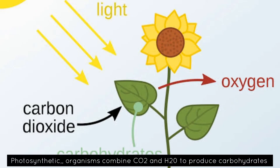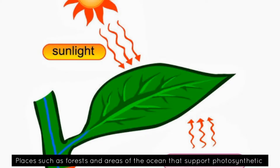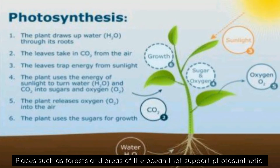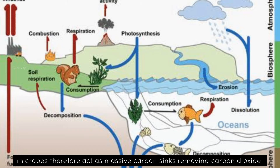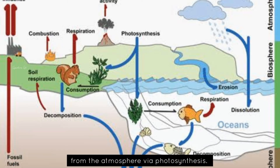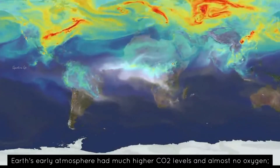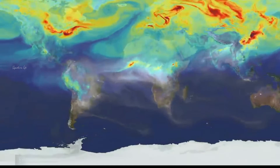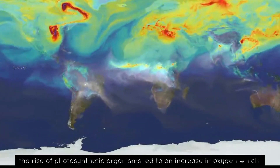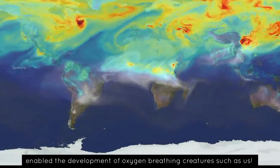Photosynthetic organisms combine carbon dioxide and water to produce carbohydrates and emit oxygen as a byproduct. Places such as forests and areas of the ocean that support photosynthetic microbes therefore act as a massive carbon sink, removing carbon dioxide from the atmosphere by photosynthesis. Earth's early atmosphere had much higher carbon dioxide levels and almost no oxygen. The rise of photosynthetic organisms led to an increase in oxygen, which enabled the development of oxygen-breathing creatures such as us.